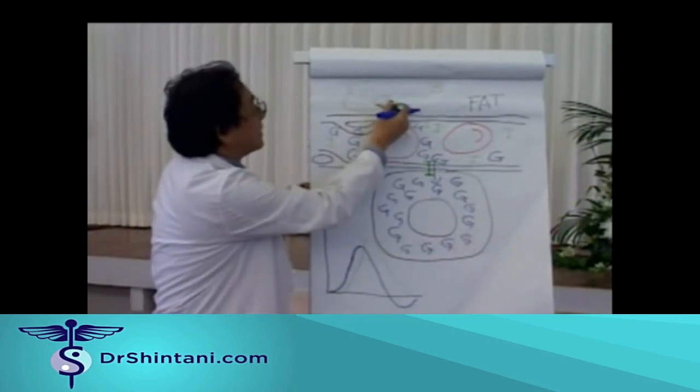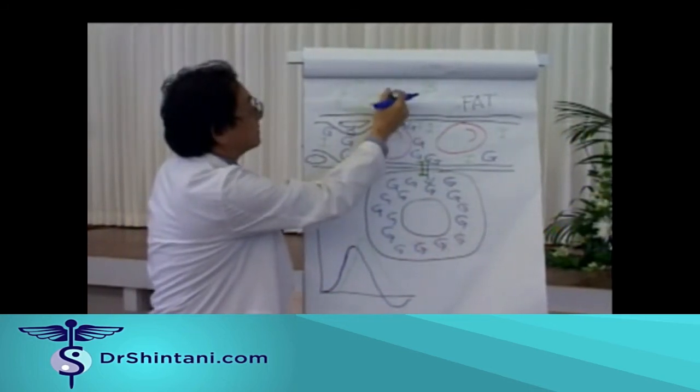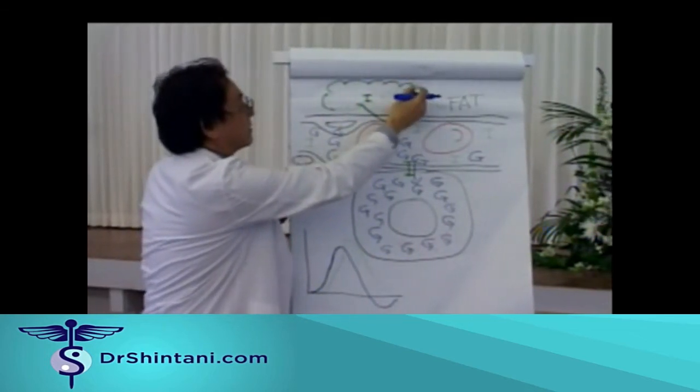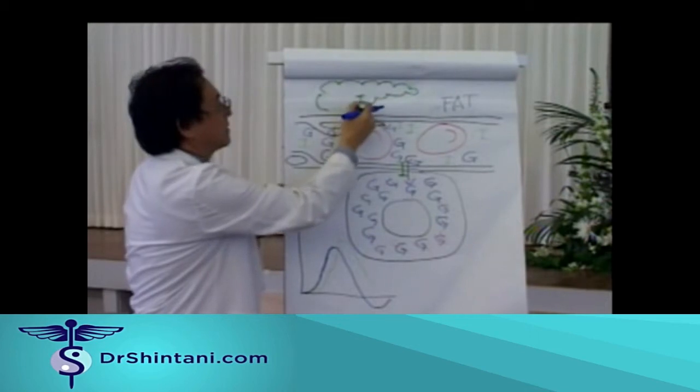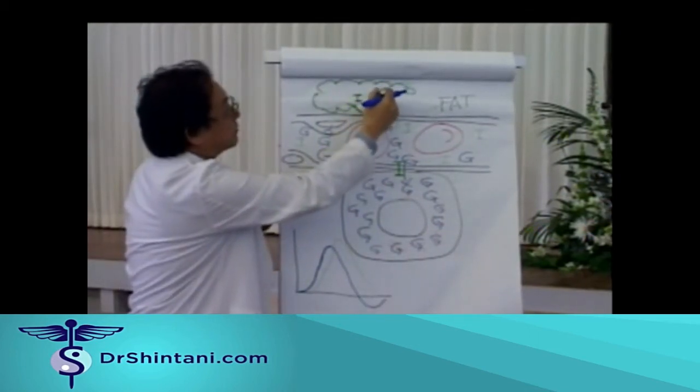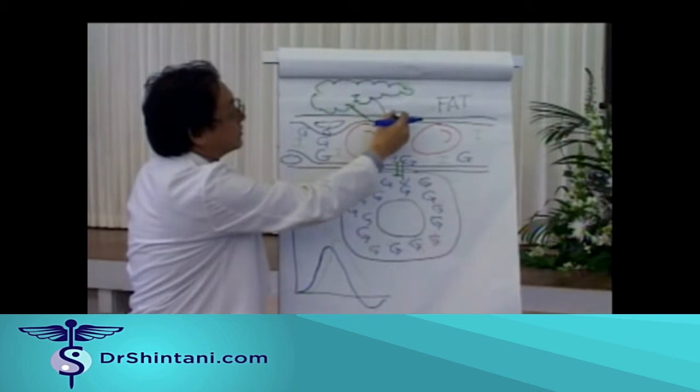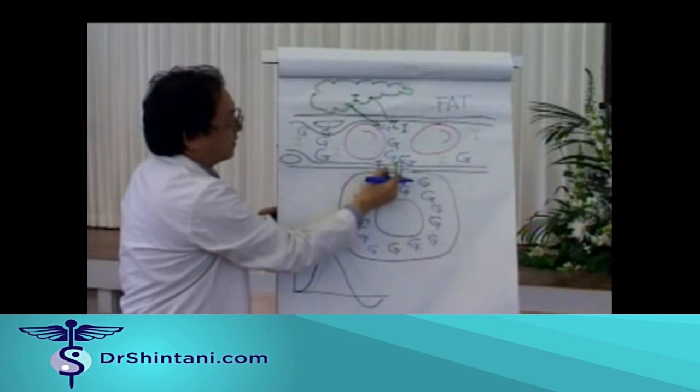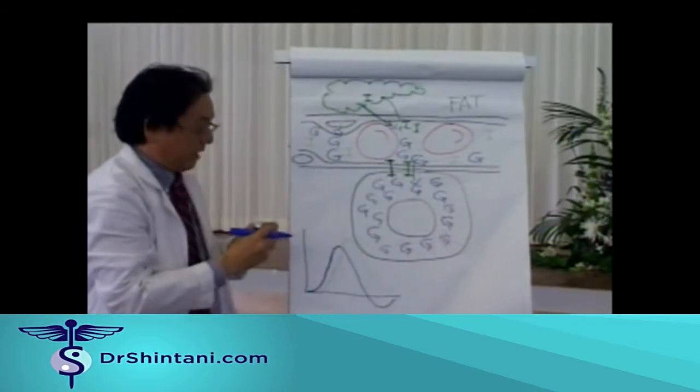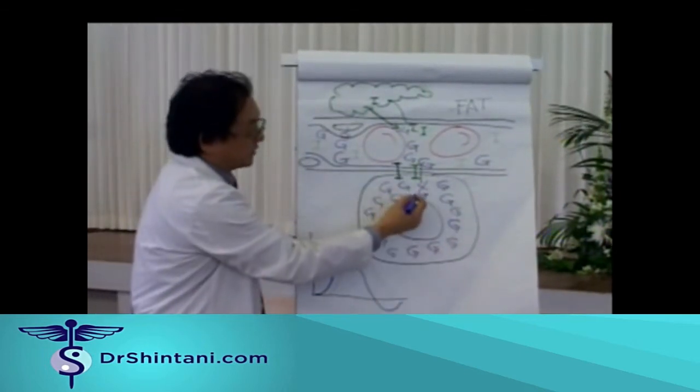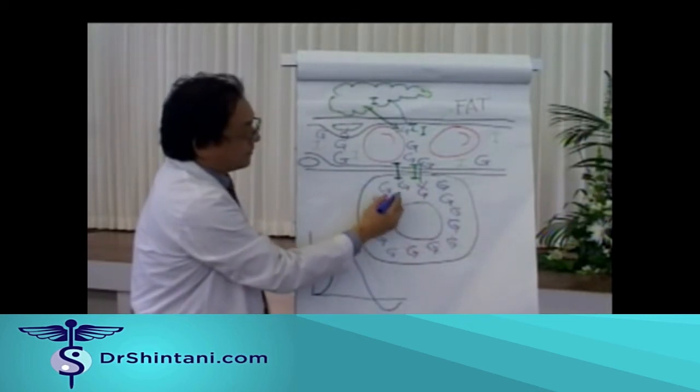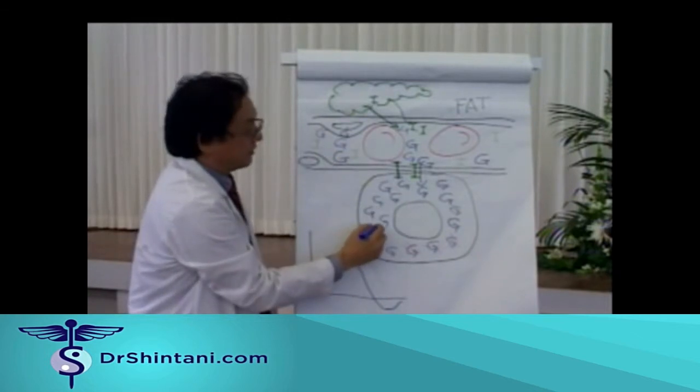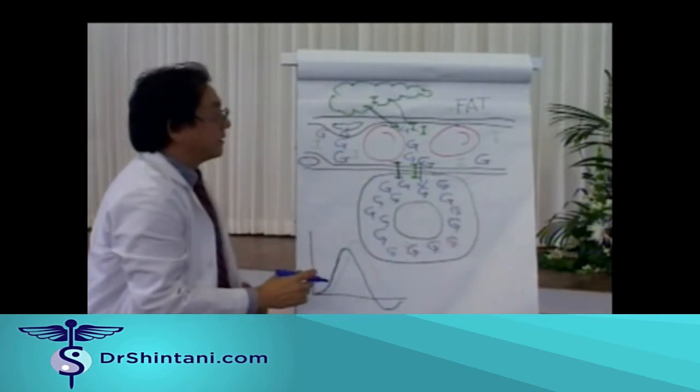And so, what happens is the pancreas starts pouring out insulin. This is a representation of the pancreas. And it starts to pour insulin into the bloodstream because it wants to start opening up the locks so that glucose enters the cell. And what happens is then blood sugar gets very high in concentration in the cell.